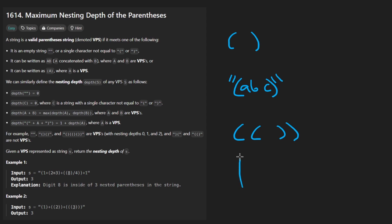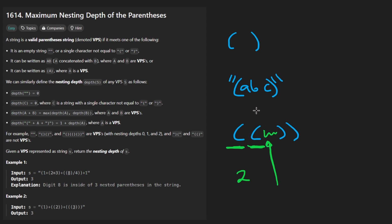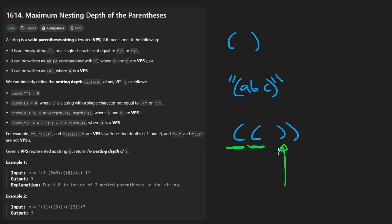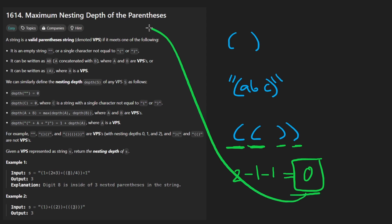Basically, how many consecutive open parentheses do we have before they are closed? If we go through this string from left to right, we see an open parenthesis — that's a count of one. Then two open parentheses — we now have two open parentheses that haven't been closed. We might see some contents in between, but ignore every character that is not an open or closing parenthesis. When we see a closing one, we decrement by one. We should always end up with zero because we're told this is always valid.